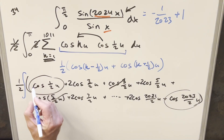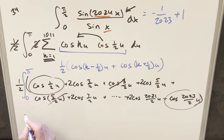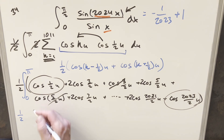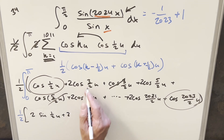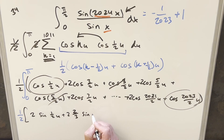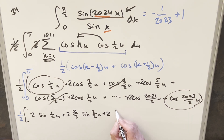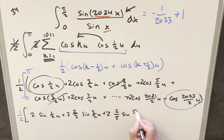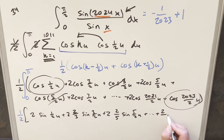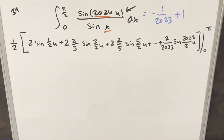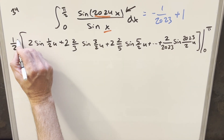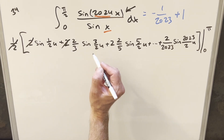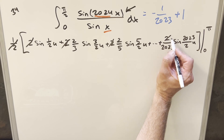Putting the integral back and integrating everything: with 1/2 out front, we get 2·sin(1/2 · u), then 2/3 · sin(3/2 · u), then 2/5 · sin(5/2 · u), and so on all the way to 2/2023 · sin(2023/2 · u). Now distributing the 1/2 in front, it cancels with the 2 in every term. And since all terms are sines, evaluating at zero they all vanish.